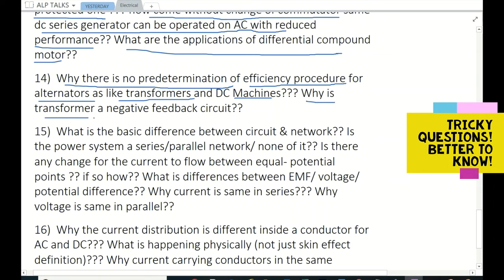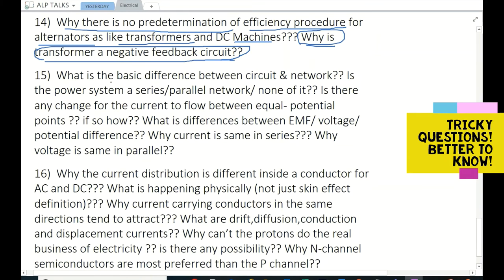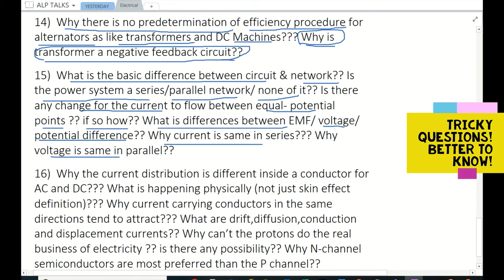Why is transformer a negative feedback circuit? Yes, this is very important one to understand transformer principle, you just check about it. What is the basic difference between circuit and network? Is the power system a series or parallel network or none of it? Is there any change for the current to flow between equal potential points? If so, how? What is the difference between EMF, voltage, potential difference? Why is current same in series? Why is voltage same in parallel? For example, here you can apply V = IR. Yes, here you have many different things in I = V / R. V is source, in V = IR, voltage is a drop.